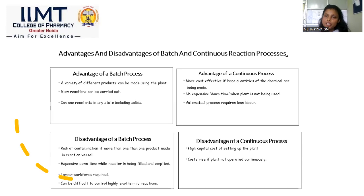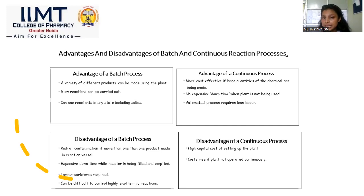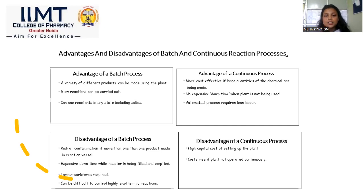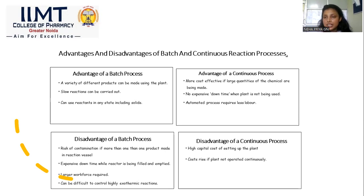Advantages of batch processes: a variety of different products can be made, slow reactions can be carried out, and reactants in any state including solids can be used. Advantages of continuous processes: large quantities of chemicals can be made and less labor is required. Disadvantages of batch processes: higher risk of contamination, more expensive, greater workforce requirement, and difficulty controlling exothermic reactions. Disadvantages of continuous processes: high capital cost for setting up the plant, and cost rises if not operated continuously.